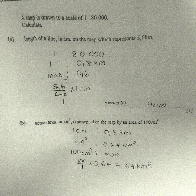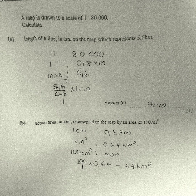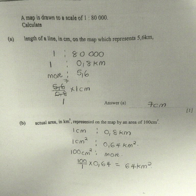On part b, we are supposed to calculate the actual area in square kilometers represented on the map by an area of 100 square centimeters. The scale of length is 1 centimeter representing 0.8 kilometers. We square the scale of length to get the scale of area: 1 square centimeter represents 0.64 square kilometers. We apply proportion: 100 over 1 times 0.64 square kilometers gives a final answer of 64 square kilometers.